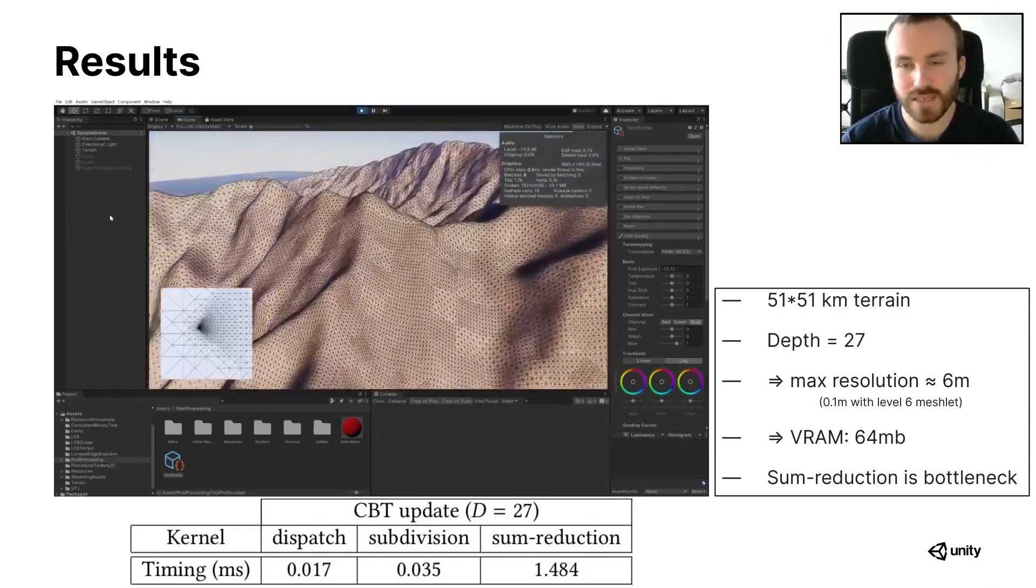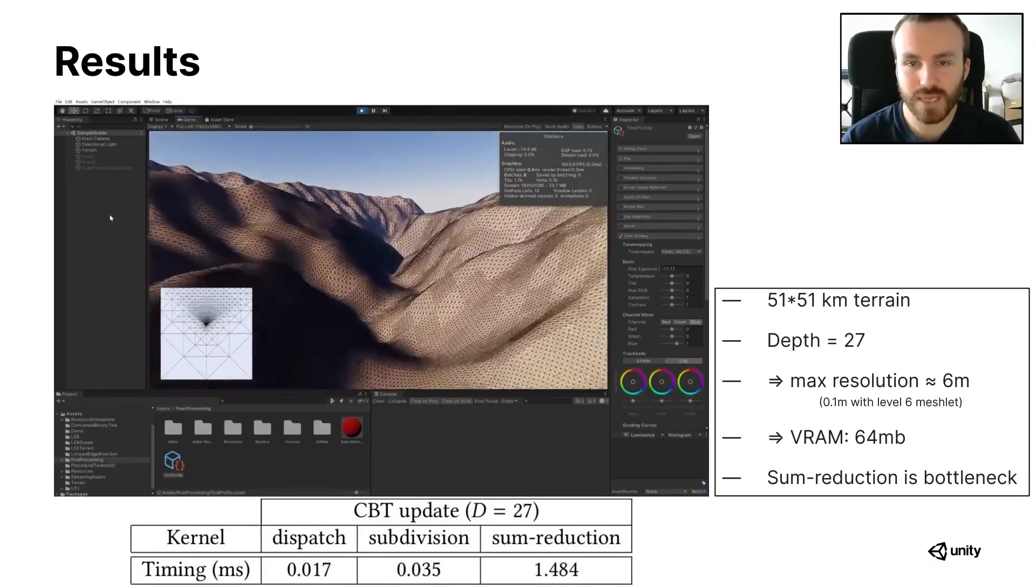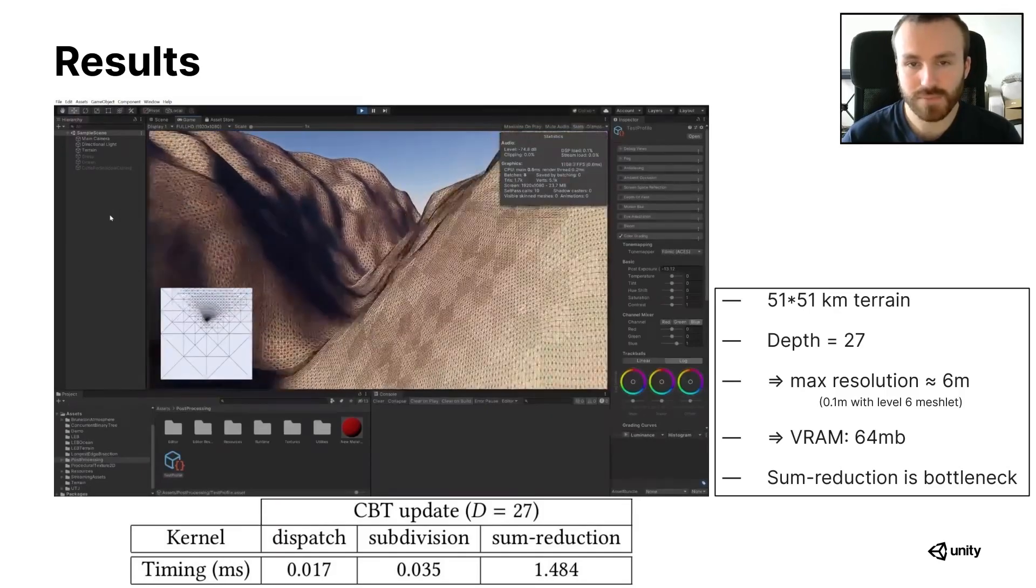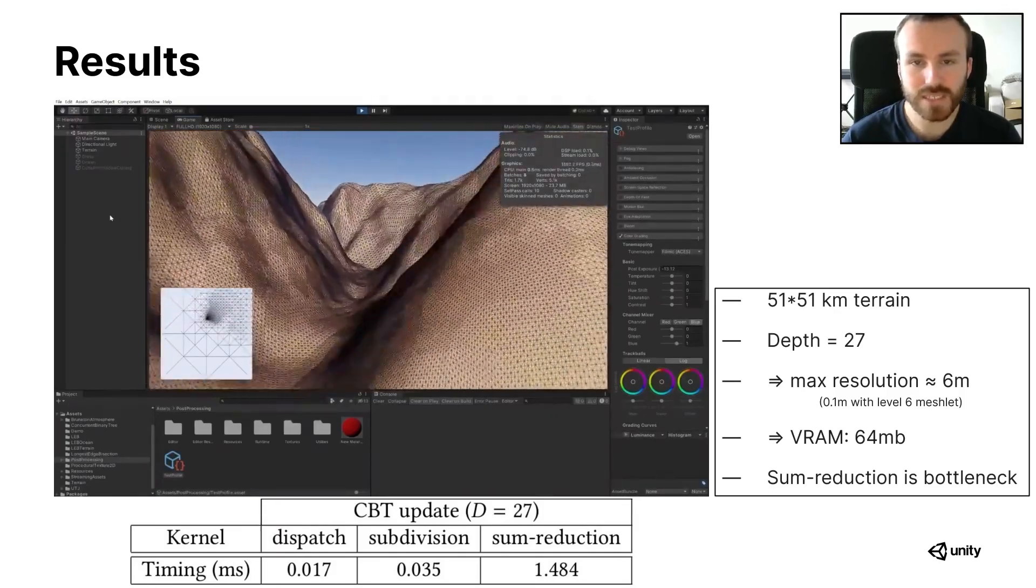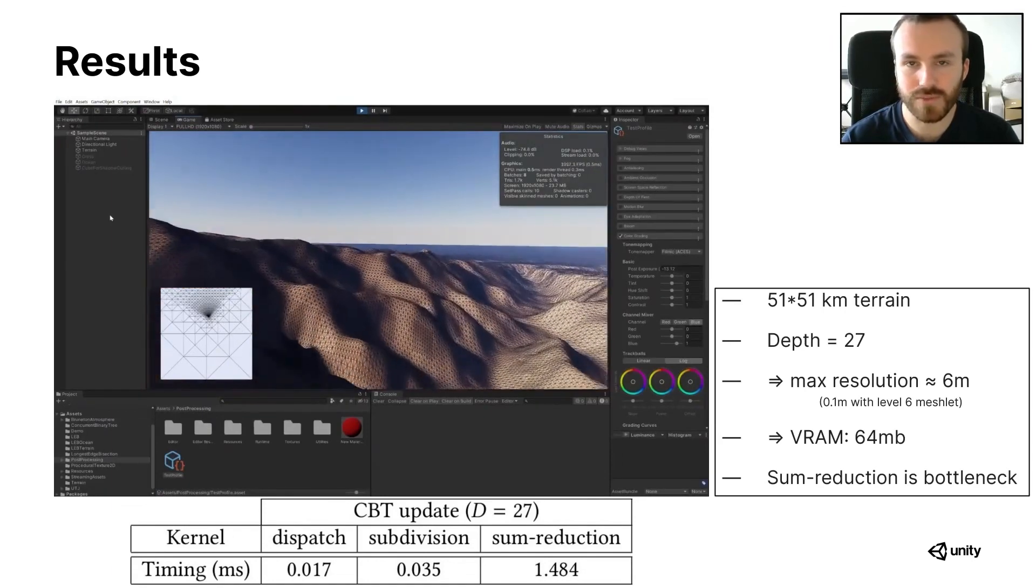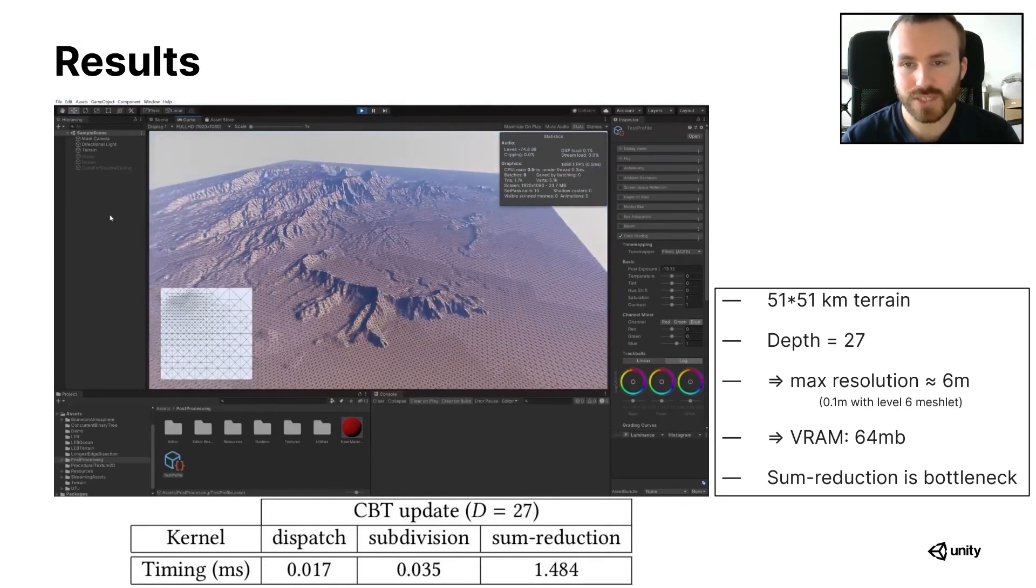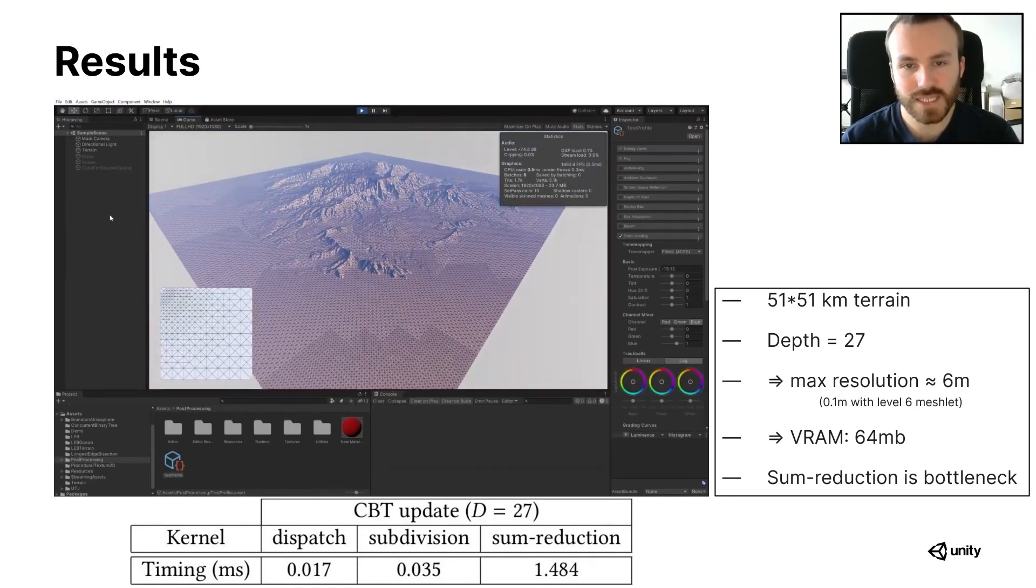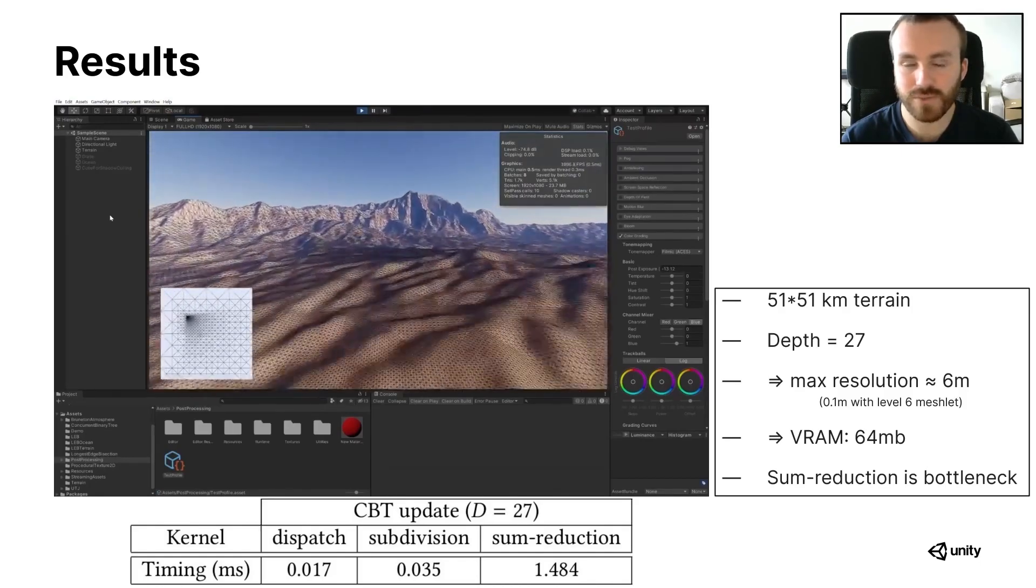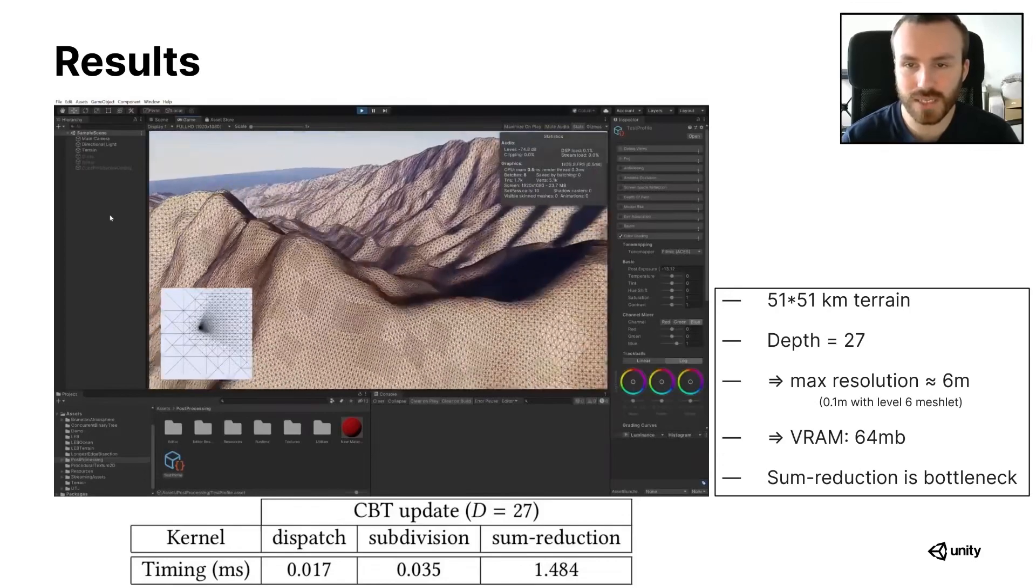So with all this implemented, this is the result we got for the paper's publication. We used a real world height map at its real scale. Here we see the Kauai island at 51 by 51 kilometers. And setting our maximum CBT depth to 27, we get the following numbers. Memory usage is 64 megabytes. It's equal to 2 to the power of depth minus 1, so it doubles with each new depth level. The maximum resolution we get on the ground for this subdivision is about 6 meters.